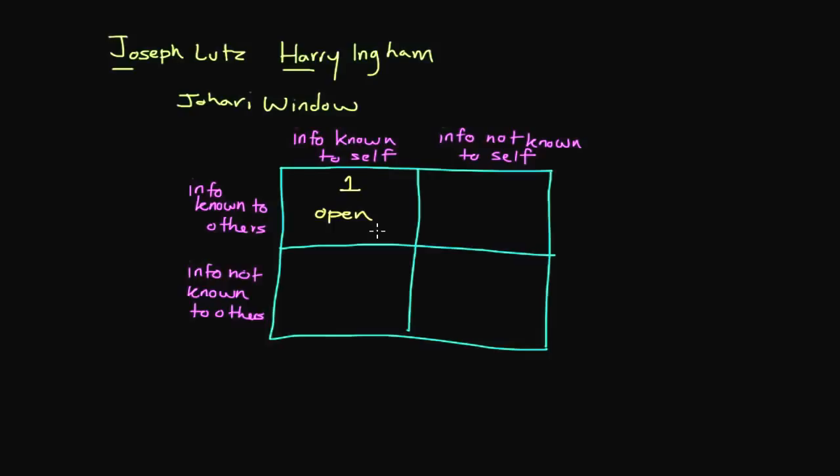And the open area, as you can see, consists of information that not only we know about ourselves, but also information that others know about us. And this is open because everybody obviously knows what the information is. And so these are things that we have chosen to self-disclose about us. It could be things like physical characteristics that are very basic. Like, well, the color of my eyes are brown. I know that. And obviously others do.